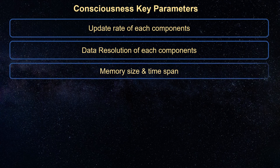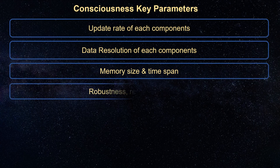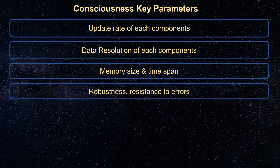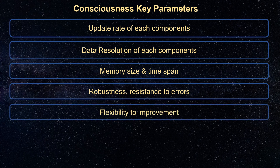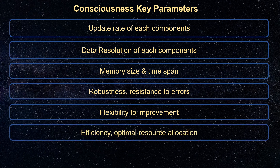Third, memory size and time span — larger memory size can cover more time span. Fourth, robustness and resistance to errors — higher consciousness requires higher reliability of information stored in memory storage, or less likelihood of it getting corrupted. Fifth, flexibility to improvement — as long as it's not yet perfect, there's always room for improvement, meaning that the components are open to changes. Sixth, efficiency and optimal resource allocation — making sure that resources are expended according to their importance and urgency.